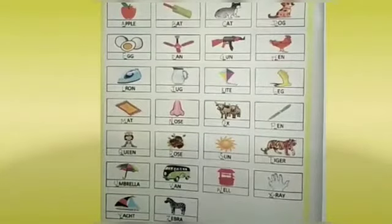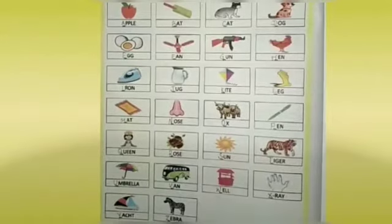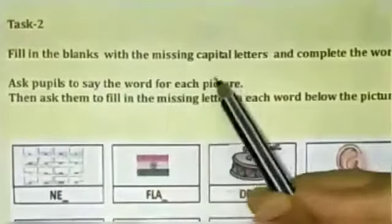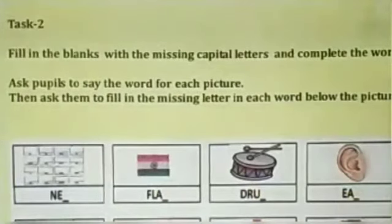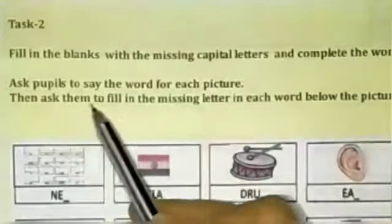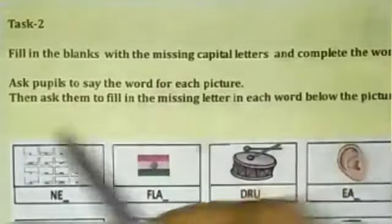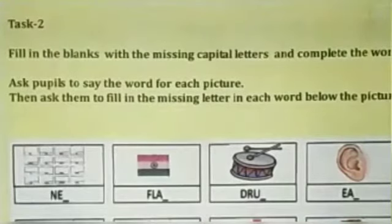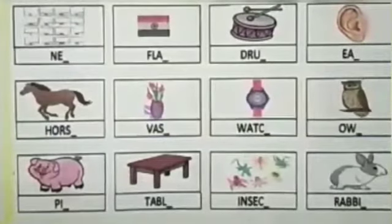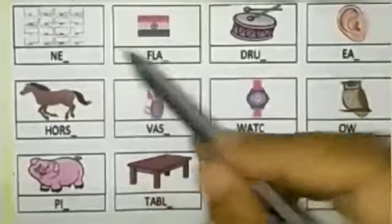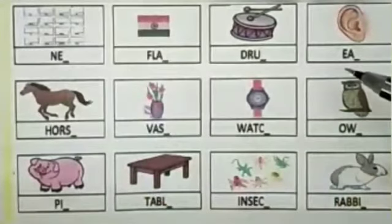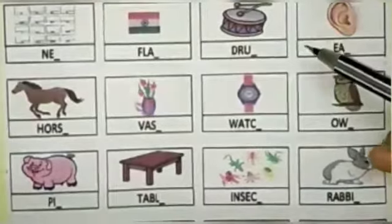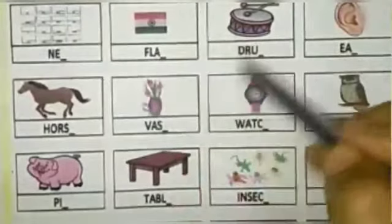Let's go to the next task. Task 2. Fill in the blanks with the missing capital letters and complete the word. Ask pupils to say the word for each picture, then ask them to fill in the missing letter in each word below the picture. The letter is missing — what is the missing letter? Let's go to the capital letter.